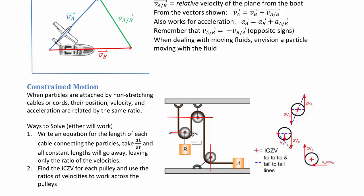Include any length that isn't changing with time — around the bottom of a pulley, or the full fixed distance between roof and floor — and call those a constant length. Make sure to include that in your length equation. When you take dL/dt, those constant portions go to zero. You end up with one L equation for each cable.